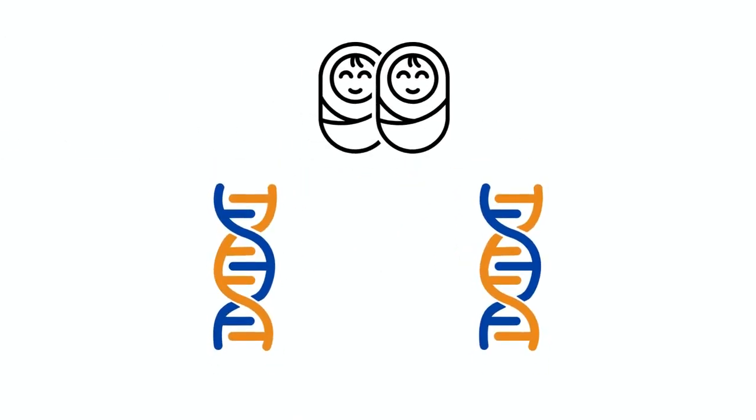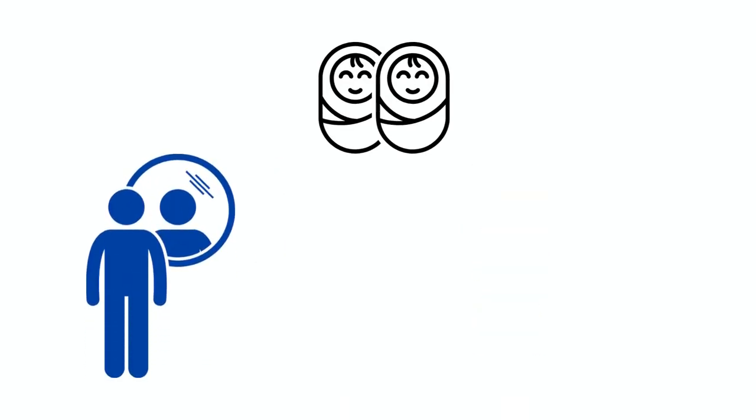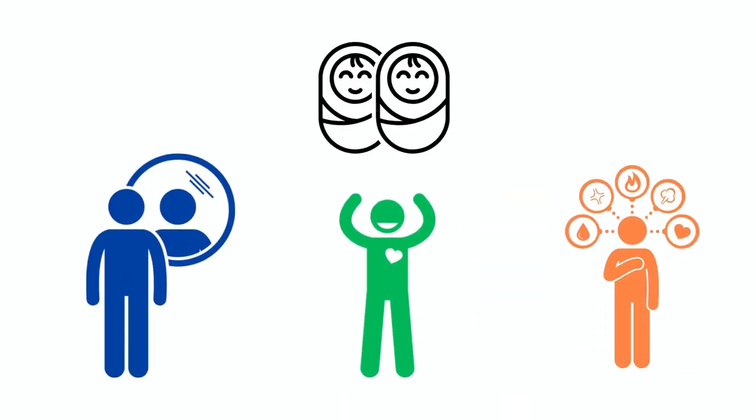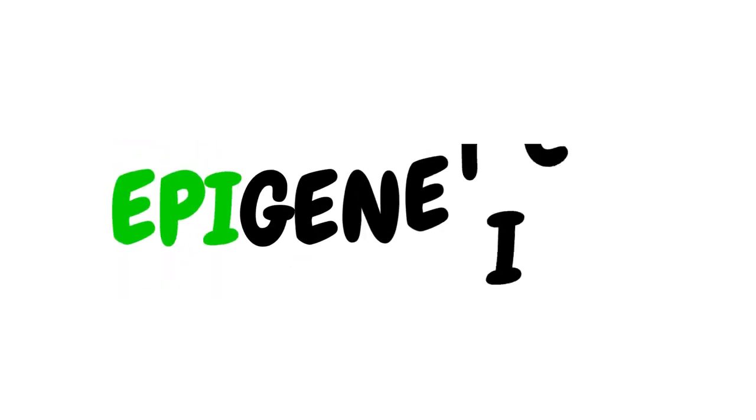Have you ever wondered why identical twins who share the exact same DNA turn out differently in terms of their physical features, behavior, or medical conditions? Well, the reasoning for this is actually in their genetics. More specifically, their epigenetics.